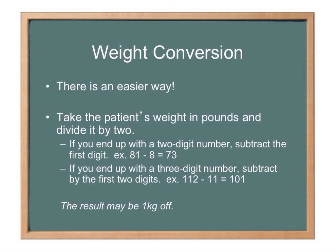There's an easier method for emergent situations. Usually we can cut numbers in half pretty well. Take your patient's weight in pounds, divide it by 2, then subtract the first digit from the result — you'll get the patient's weight in kilograms, or pretty close, maybe about 1 kilogram off. That's acceptable, because drug math is largely an estimate anyway. If the patient is unresponsive, you may not know their exact weight.